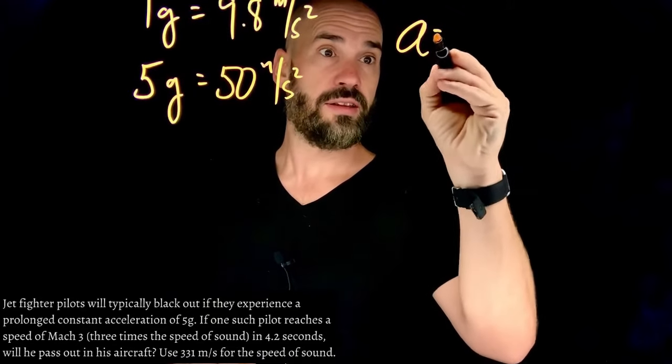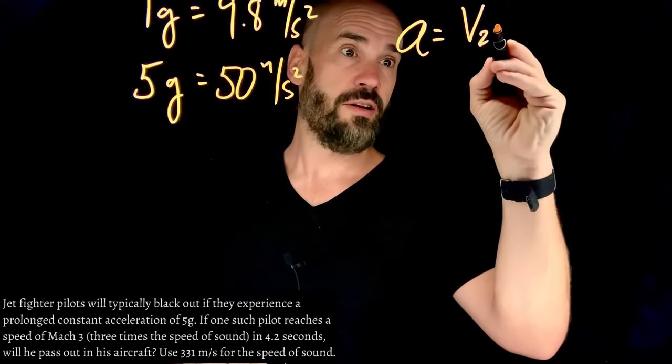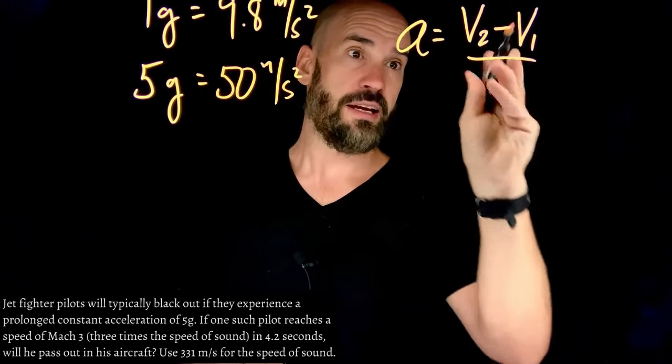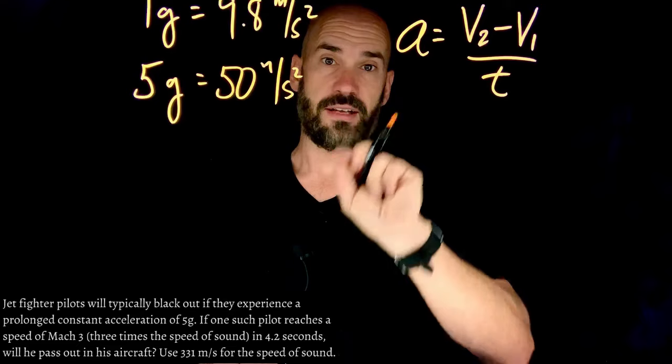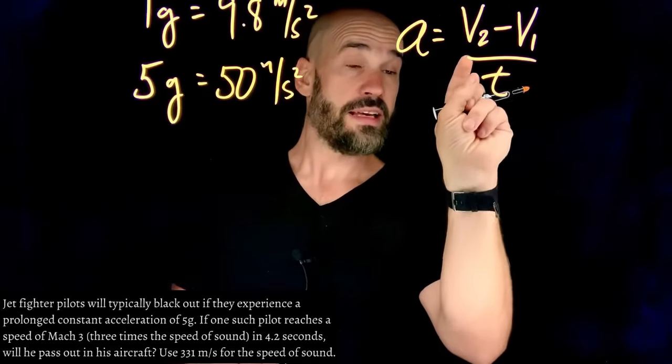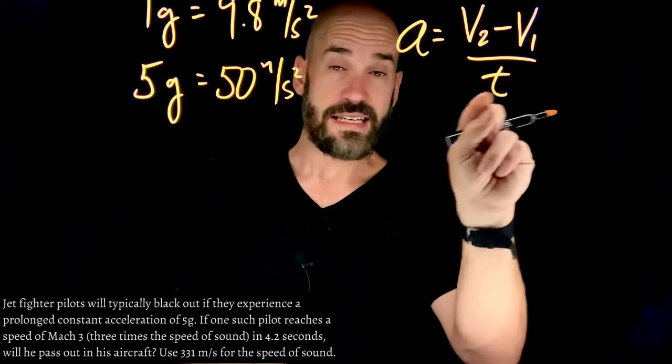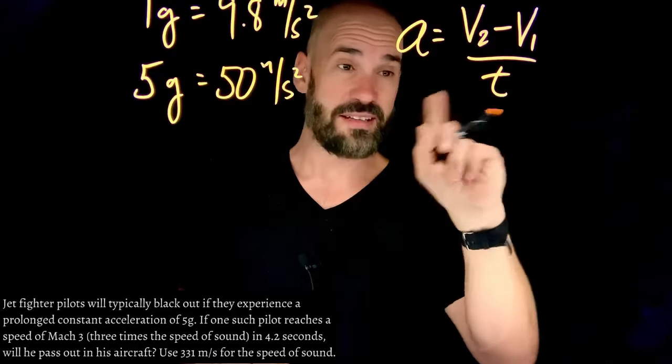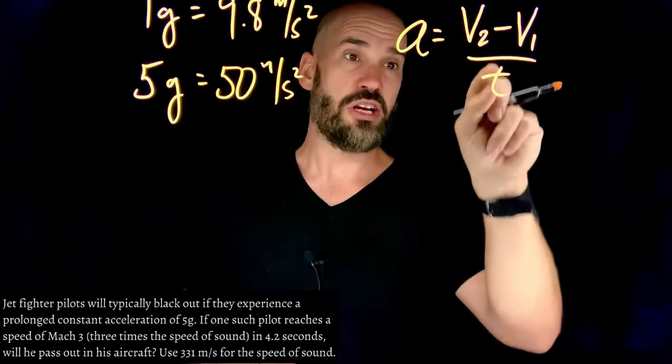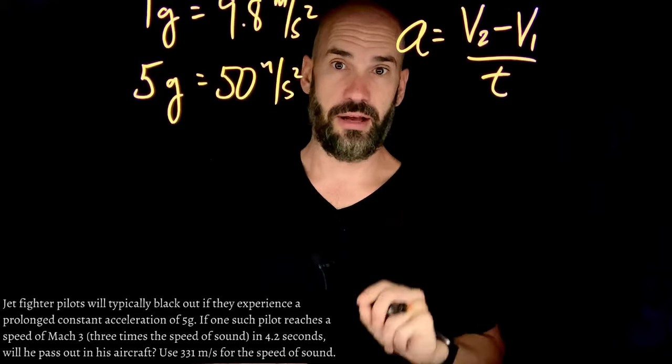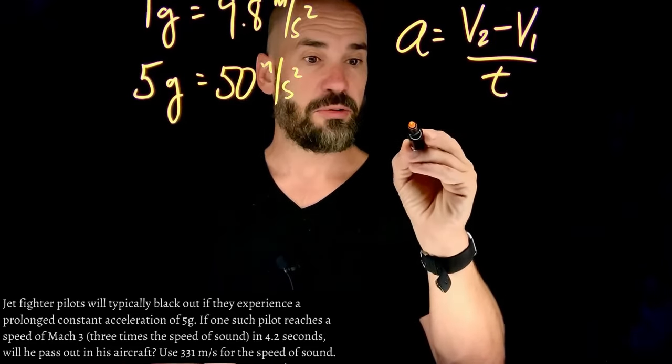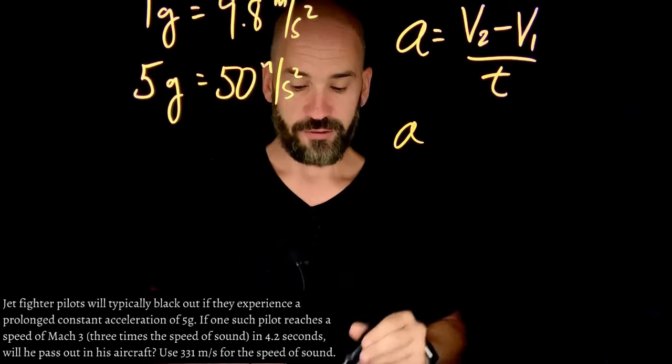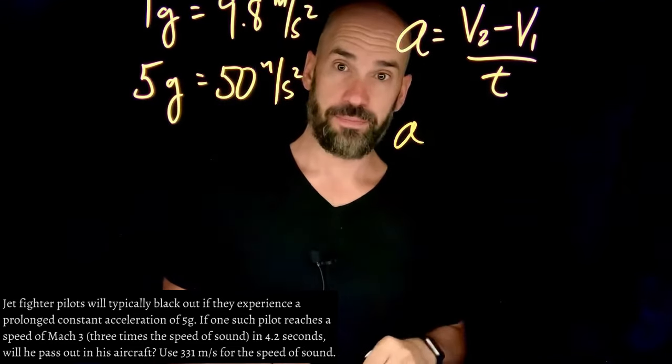Again, we start out with this little equation for acceleration. The change in velocity over the time interval is the acceleration of an object. The time interval at which this velocity changes is always just going to be t from this point on. So here's the deal. We want to find out what the acceleration is if we go from zero to Mach 3.